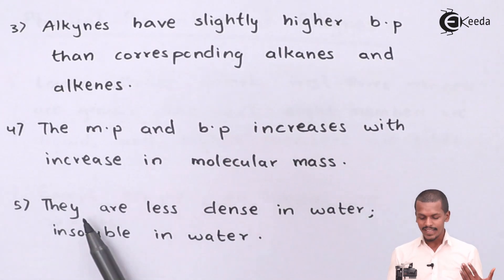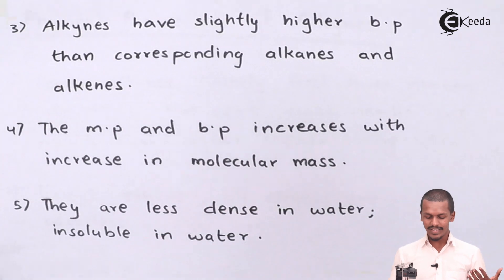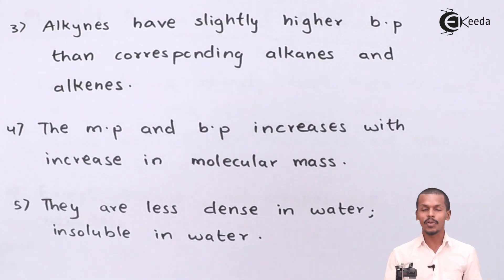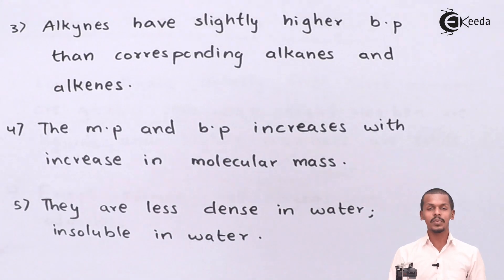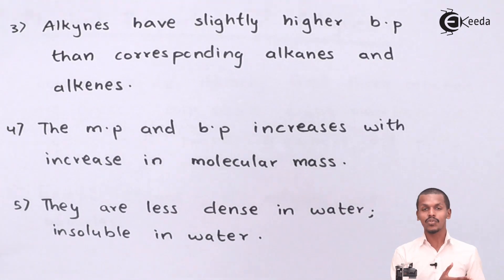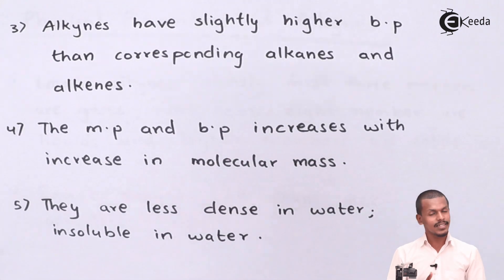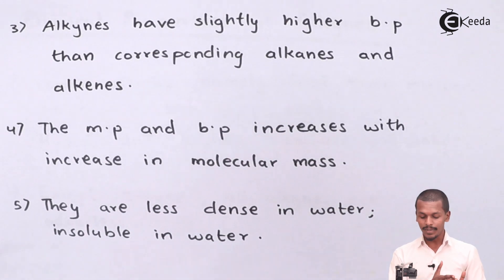Alkynes are less dense than water and hence are very insoluble in water. These are hydrocarbons which are not soluble in water, but they can be soluble in organic solvents like benzene and chloroform. So therefore these are basically not soluble in water.